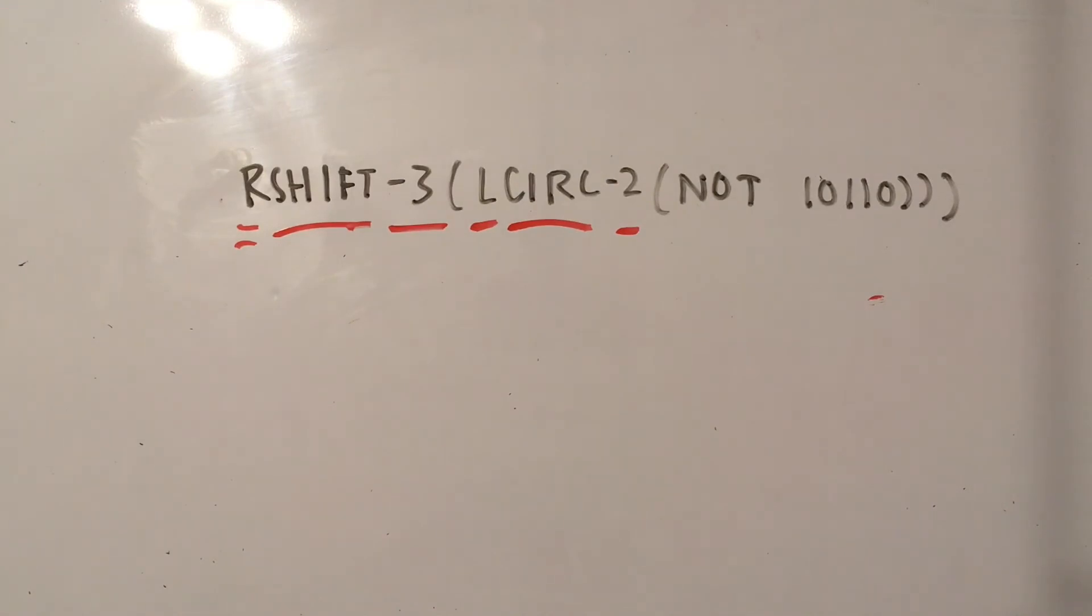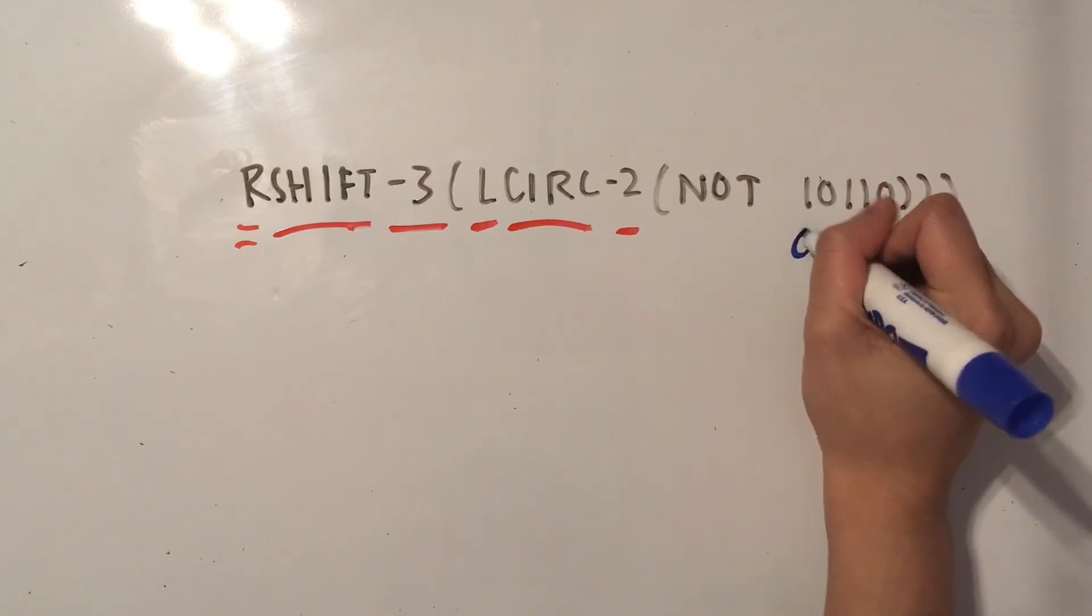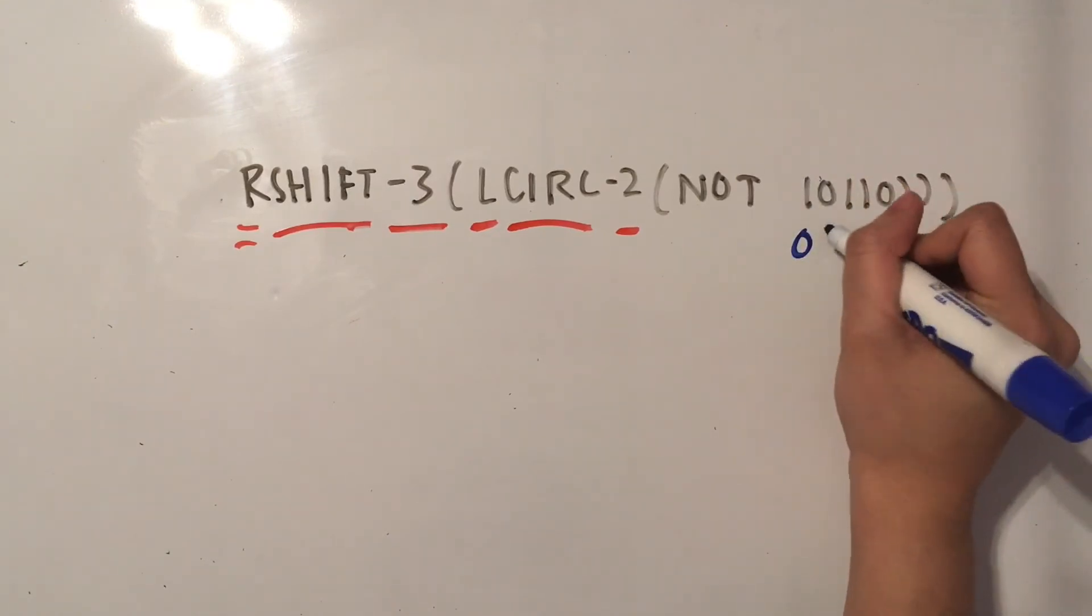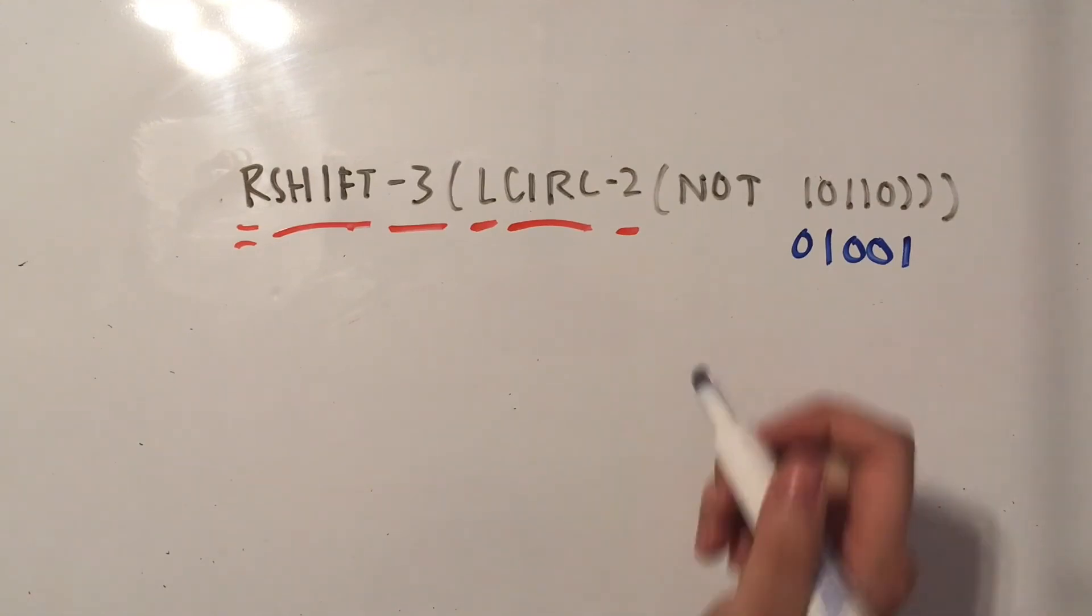So this operation is going to give us the opposite. So the opposite of 1 is 0, the opposite of 0 is 1. And so we have 01001. Okay, that's done.